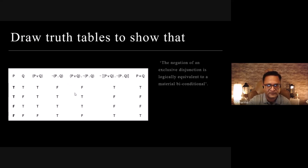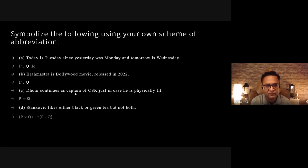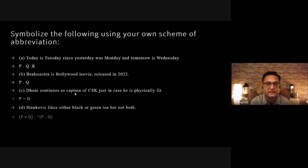The symbolization questions also required a scheme of abbreviation. The first: 'Today is Tuesday since yesterday was Monday and tomorrow is Wednesday.' This is a conjunction of three propositions, symbolized as p·q·r, where p = 'Today is Tuesday,' q = 'Yesterday was Monday,' and r = 'Tomorrow is Wednesday.'